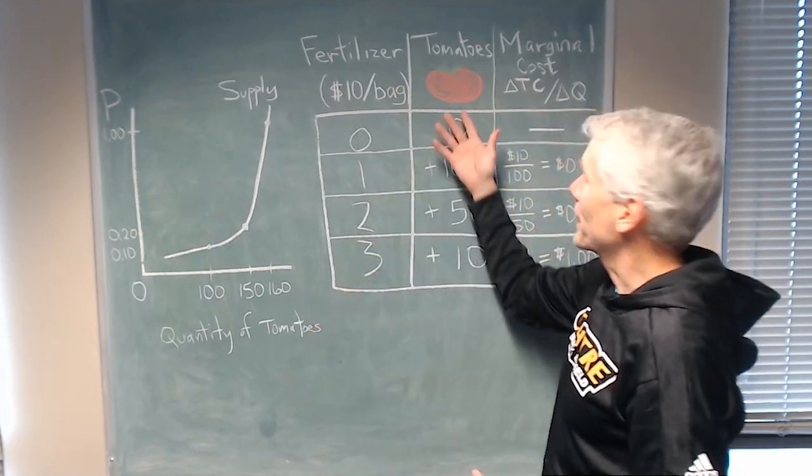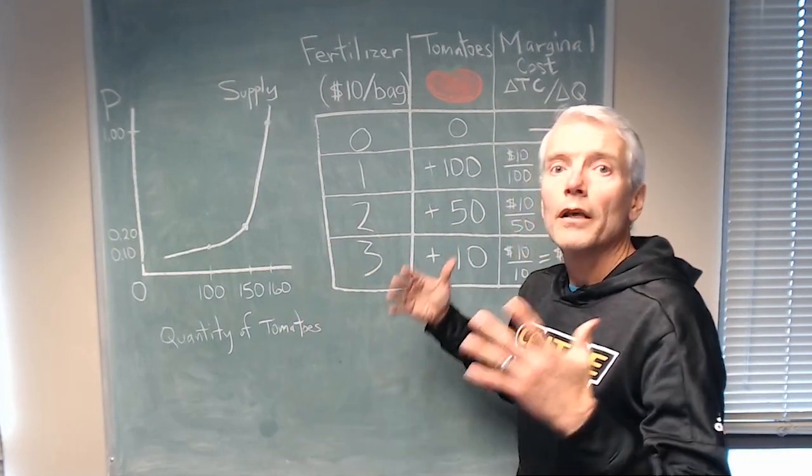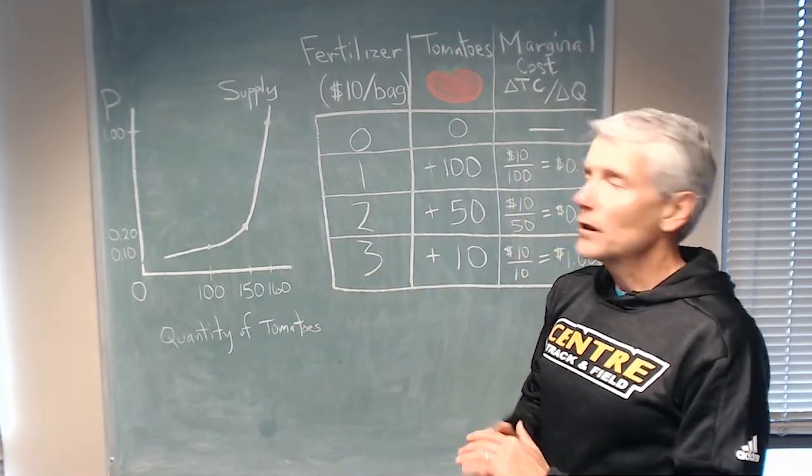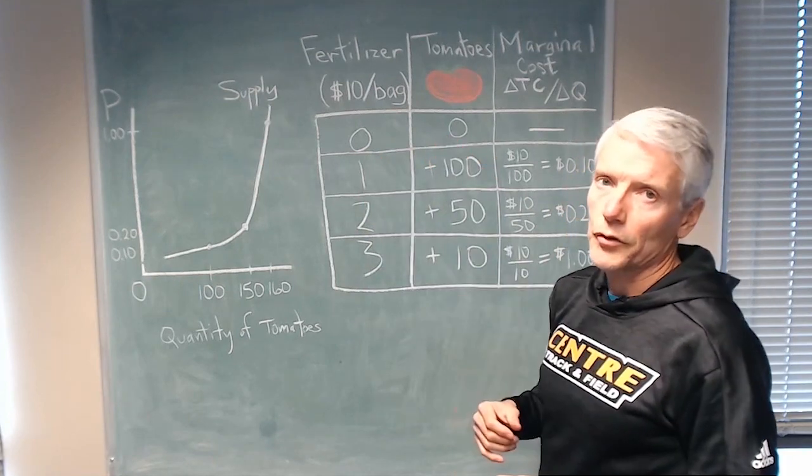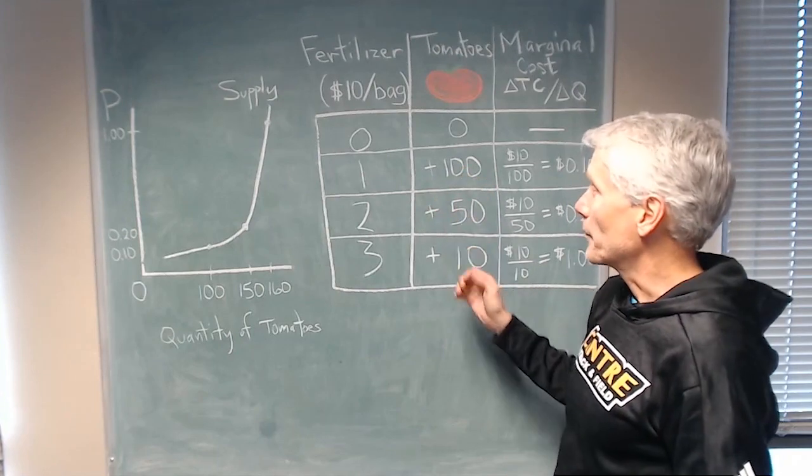Suppose that we are making tomatoes. And we have the tomatoes planted in the garden, but they don't have any fertilizer. With no fertilizer, you get no tomatoes. As you add fertilizer, you get more and more tomatoes.